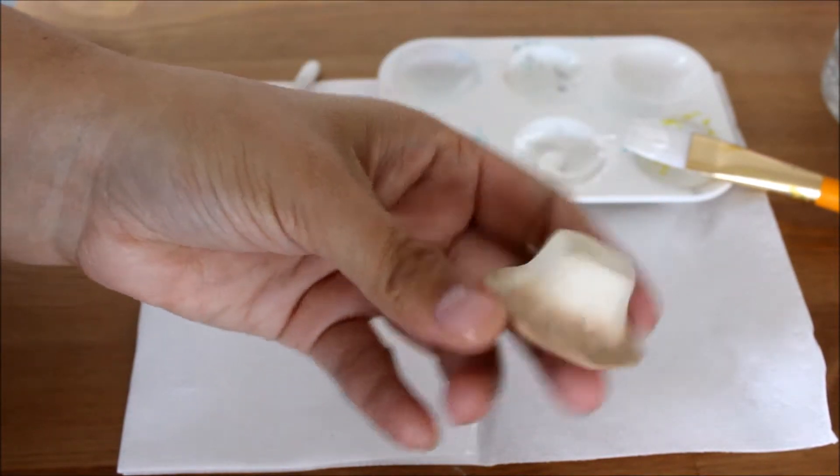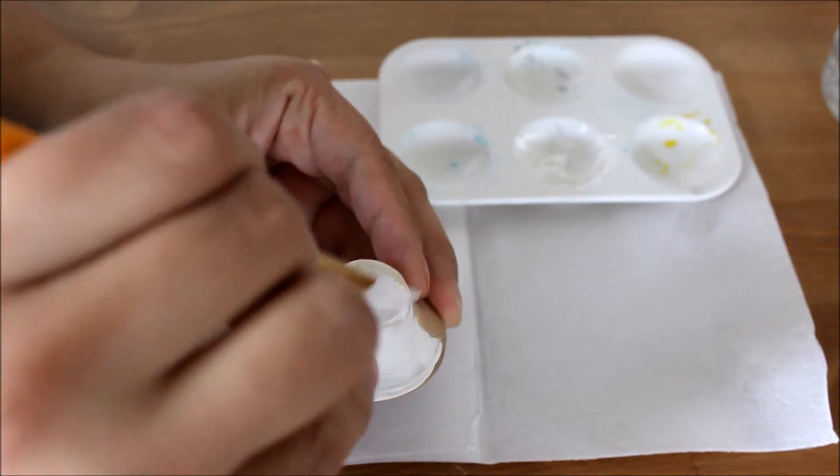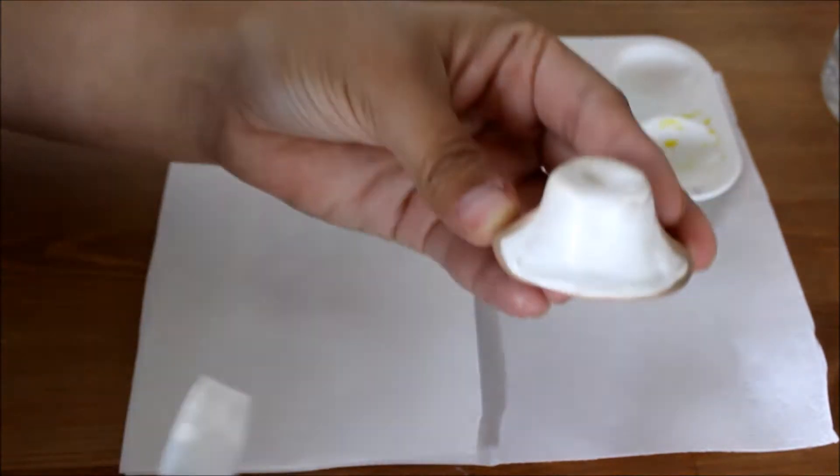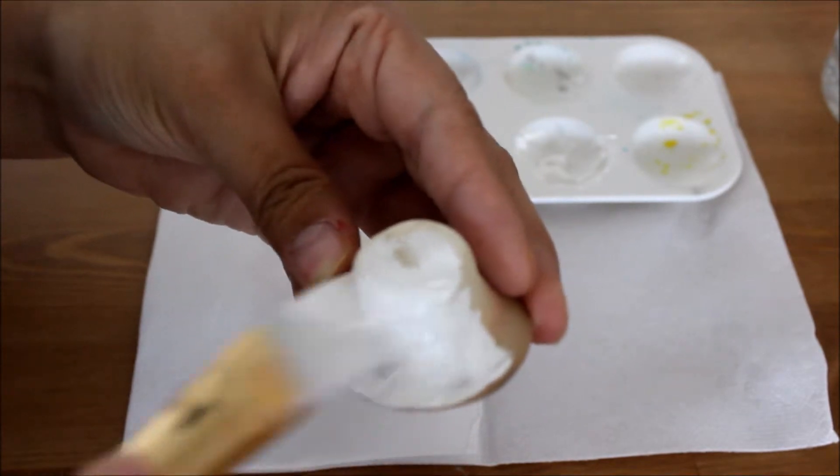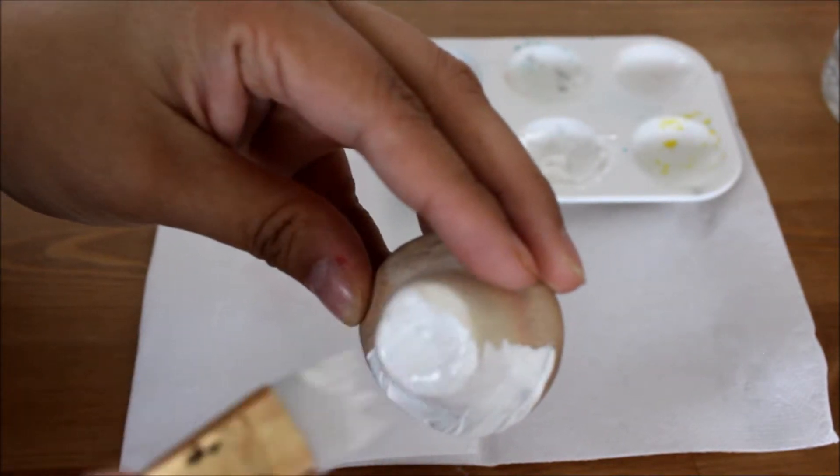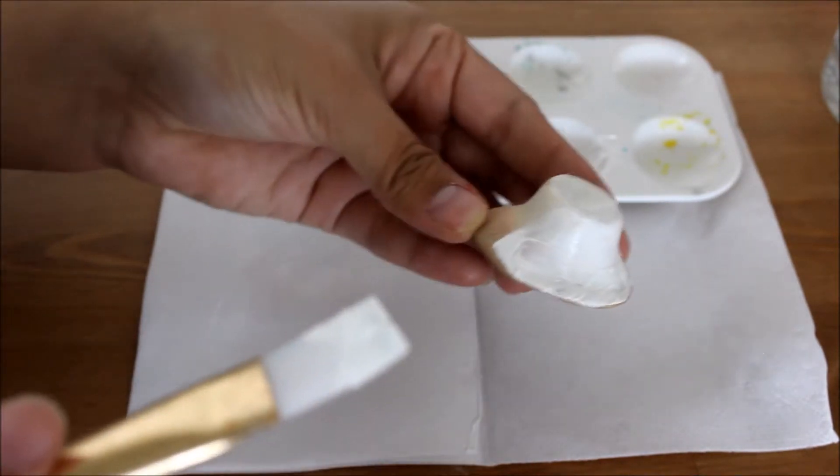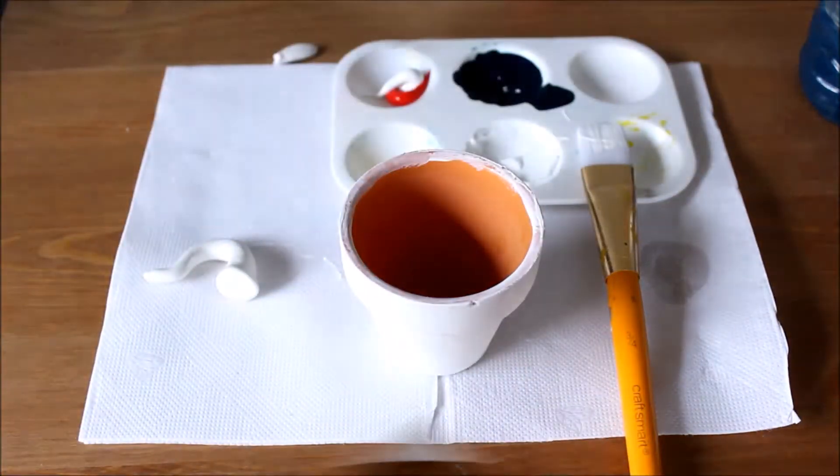But it doesn't really matter because we're just gonna paint right over it. So even if it comes out a little burnt, don't worry about it. It's gonna be covered up. So I mean that's what makes this fun. Just continue on painting it that way. The burnt part isn't noticeable. And then once you're done, just set it aside and let it dry.